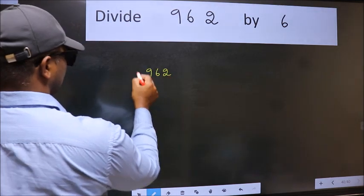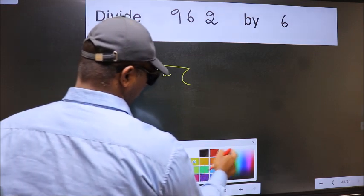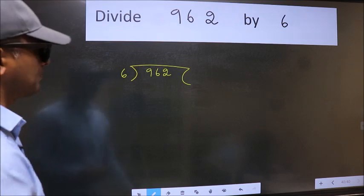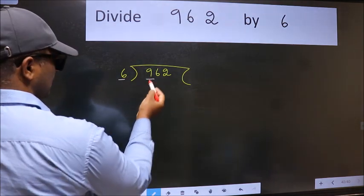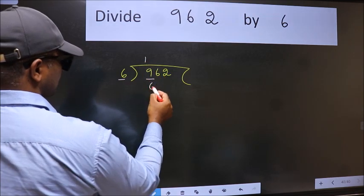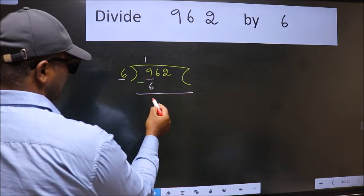962 here, 6 here. This is your step 1. Next, here we have 9 and here 6. A number close to 9 in 6 table is 6 once 6. Now we should subtract. We get 3.